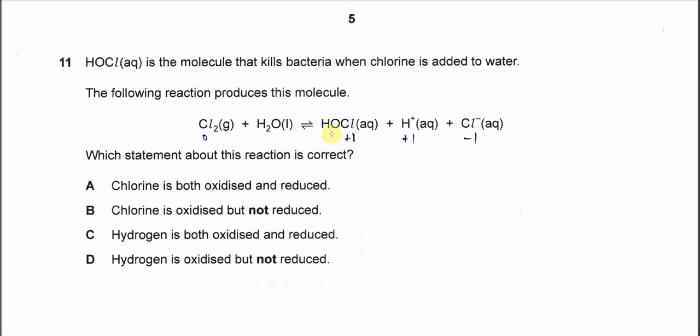So in the HOCl, its oxidation number is positive one. If you want to know how to get it, your oxygen is negative two, hydrogen is positive one. So chlorine is positive one.